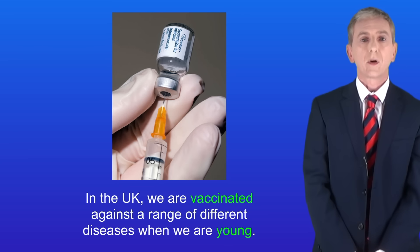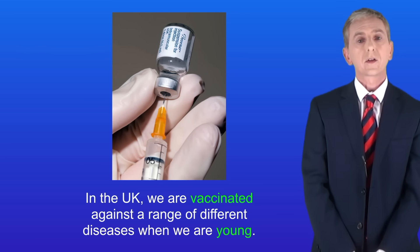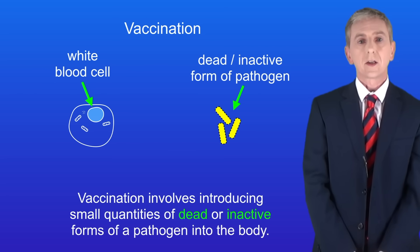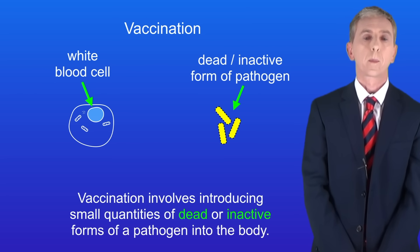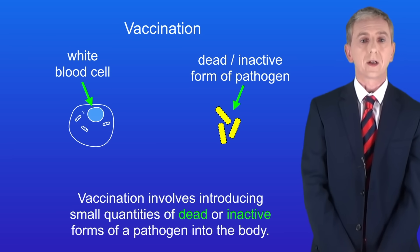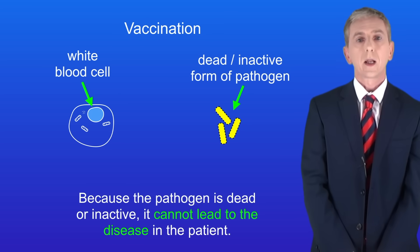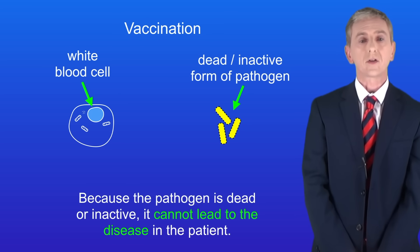In the UK we're vaccinated against a range of different diseases when we're young. You need to be able to describe how vaccines work. Vaccination involves introducing small quantities of dead or inactive forms of a pathogen into the body. Here I'm showing you a white blood cell and the dead or inactive form of the pathogen in the vaccination. A key point is that because the pathogen is dead or inactive it cannot lead to the disease in the patient.